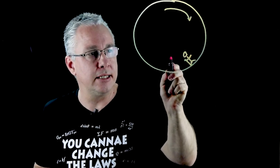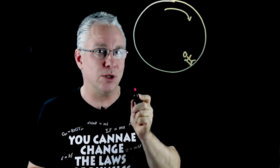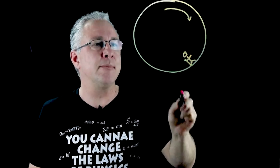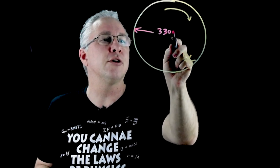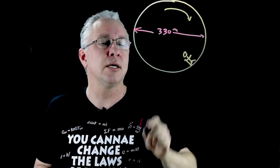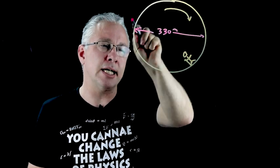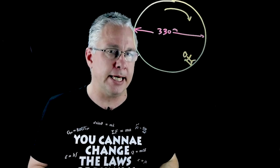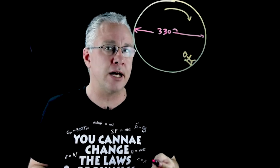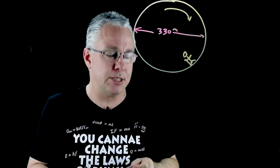So here I have an astronaut and I'll call him Dr David Bowman and David Bowman is in a spacecraft that has a diameter of 330 meters and we're wanting to know what is the period, the time it takes to do one complete loop, as long as Dr David Bowman experiences an acceleration due to gravity of 9.8 meters per second squared.